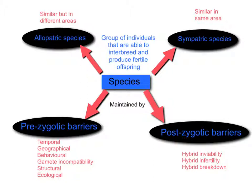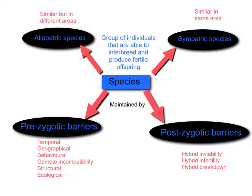There are two different types of species we're going to look at. The first is allopatric species — 'allo' referring to 'other', 'patric' meaning country — so these are species that are geographically separated from each other. Sympatric species — 'sym' meaning same — are species within the same area. Both types come from a common point of origin but are now separate species.